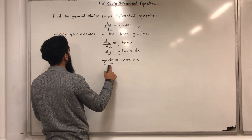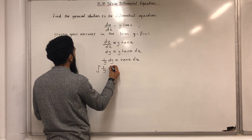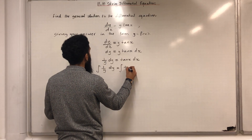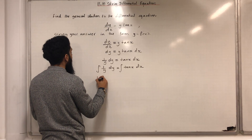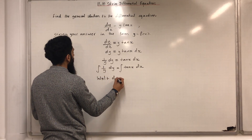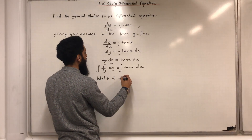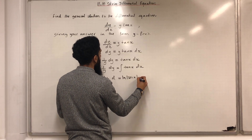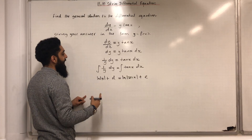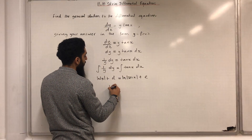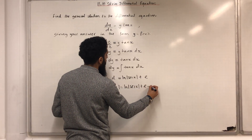The way I can get rid of the differentials on both sides of the equation is by integrating both sides. So the integral of 1 over y dy equals the integral of tan x dx. The integral of 1 over y dy is ln|y| plus d, where d is a constant of integration. This equals the integral of tan x dx, which is ln|sec x| plus e, where e is a constant of integration.